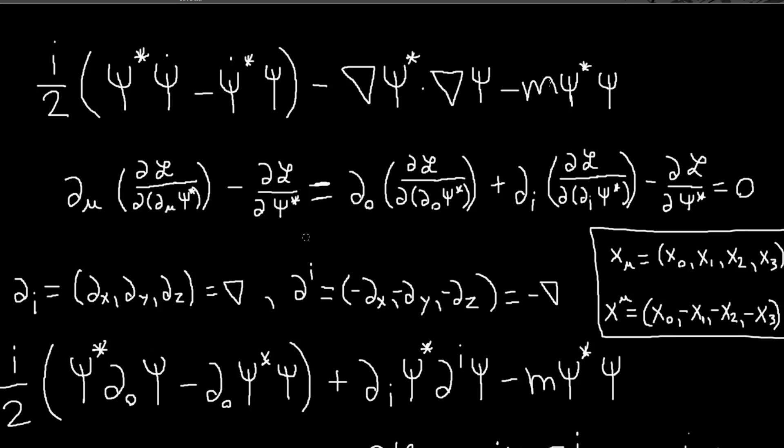The dots just become d_0 psi and d_0 psi star. I forgot to mention that this psi is a complex field. What we do when we have complex fields is we're going to treat psi and its complex conjugate as independent fields. We should have two Euler-Lagrange equations, but since the independent fields are complex conjugates of each other, we'll find one equation of motion and then take the complex conjugate, and that will be the equation of motion for the other field.